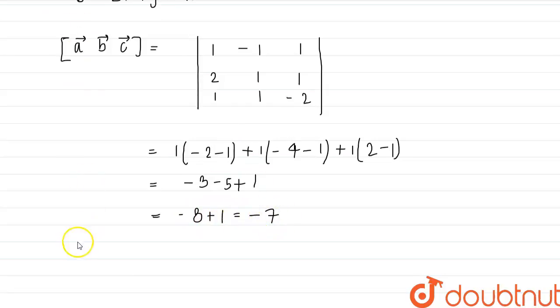So the value of the scalar triple product of a, b, c is equal to minus 7. So this is the required answer. Thank you.